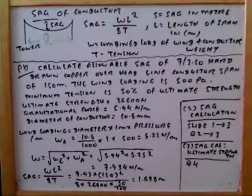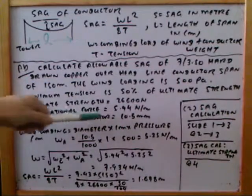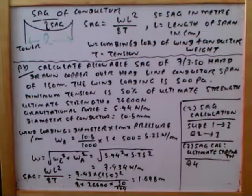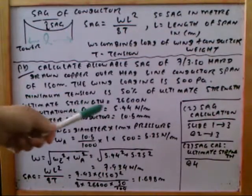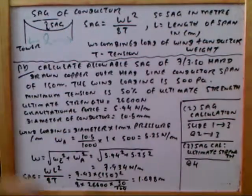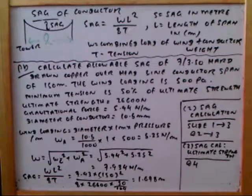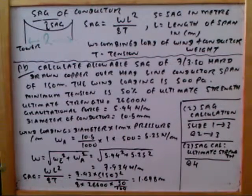The gravitational force is 5.94 newton per meter, and the diameter is 10.5 millimeters. The gravitational force acts vertically downward, and the wind force acts horizontally. Both forces need to be combined to get the total weight.